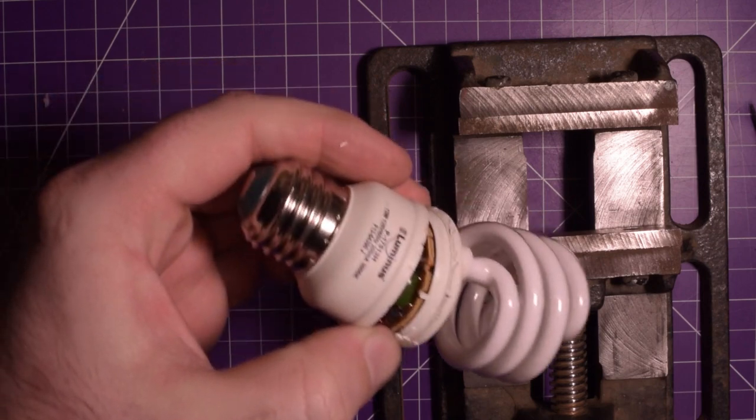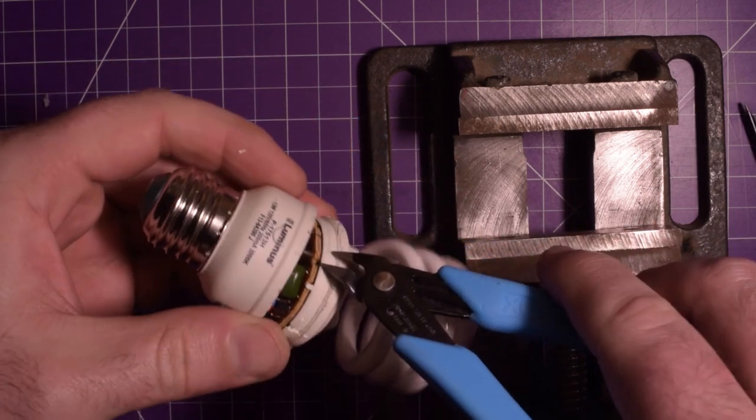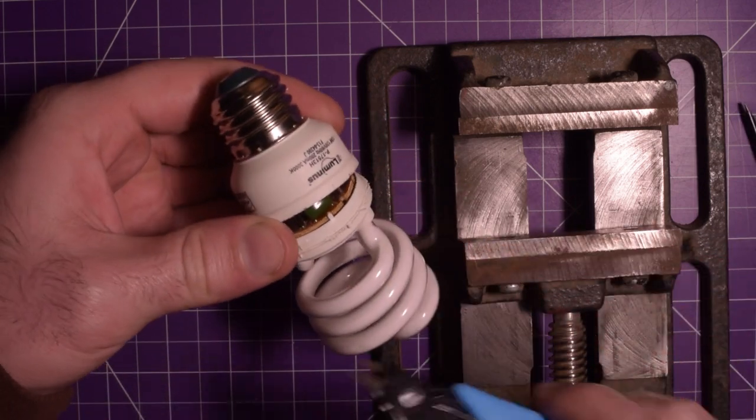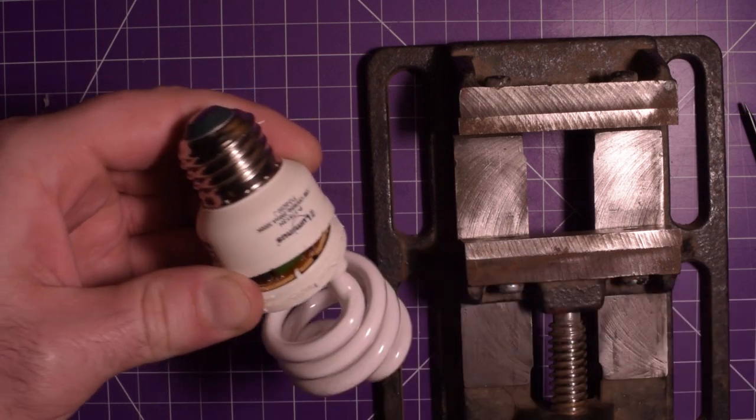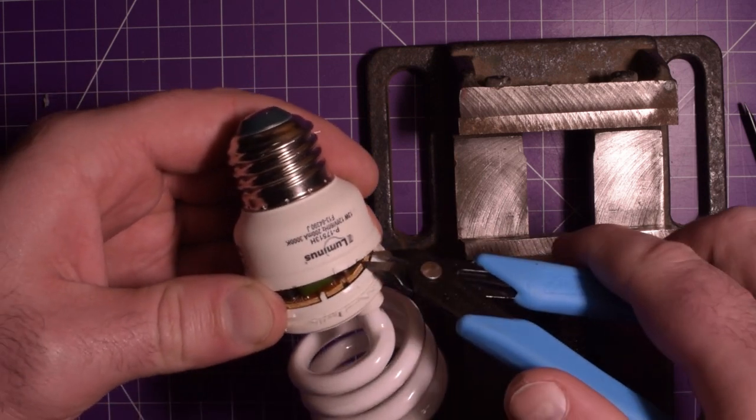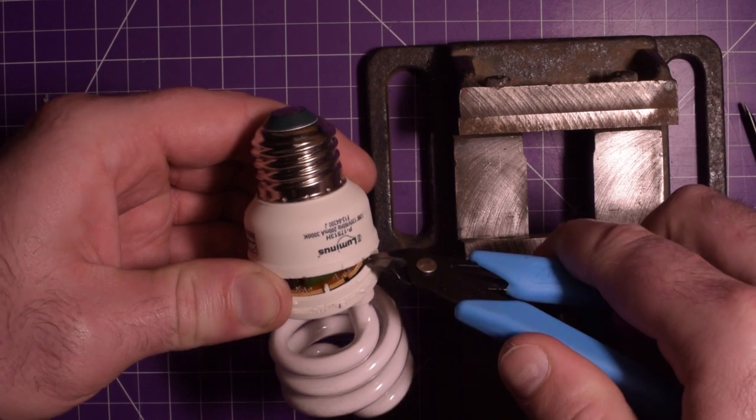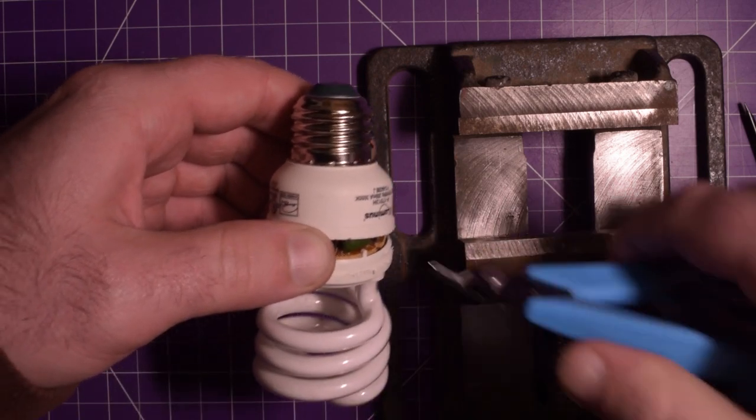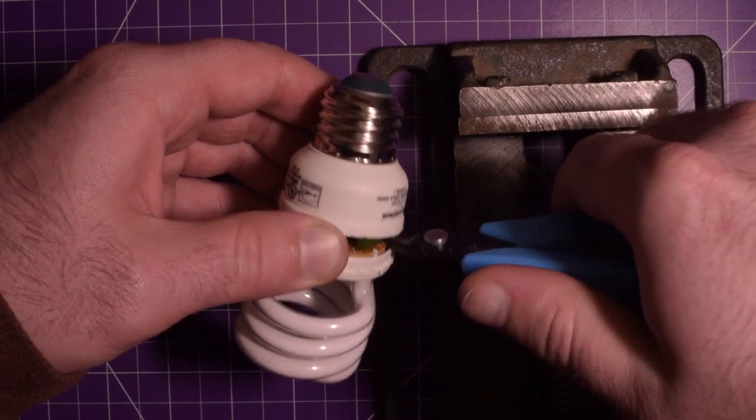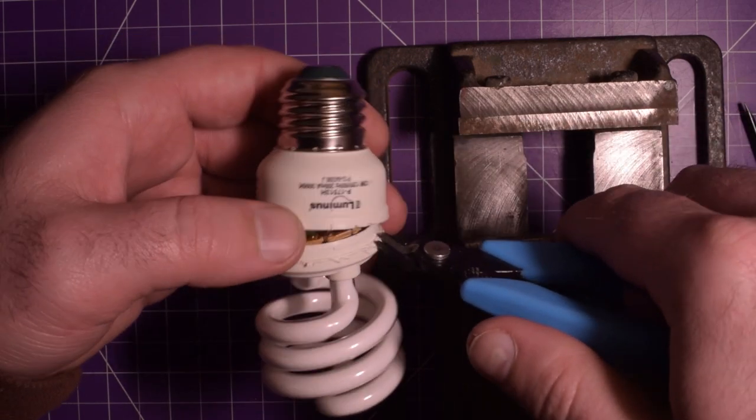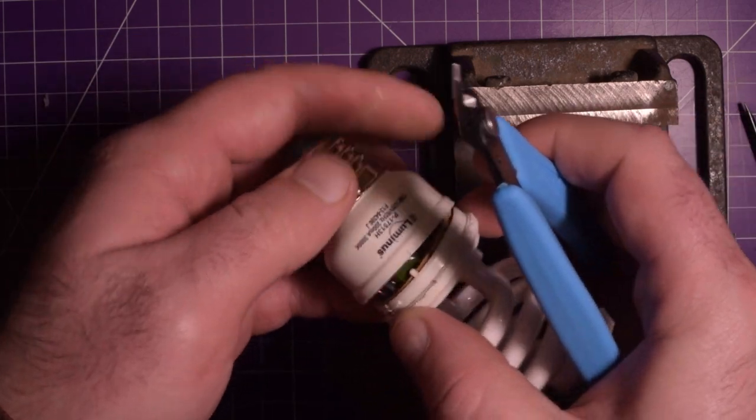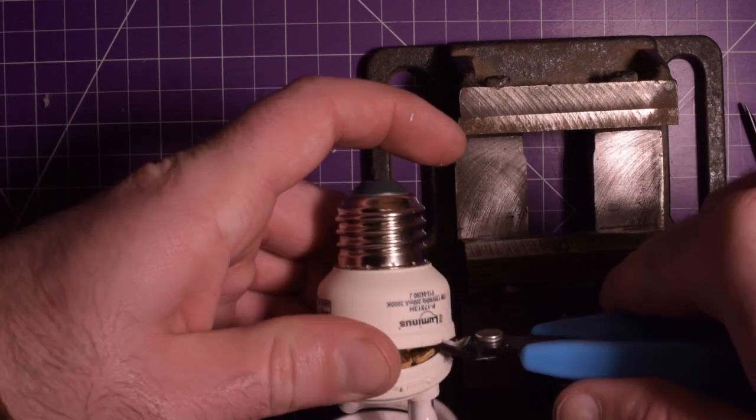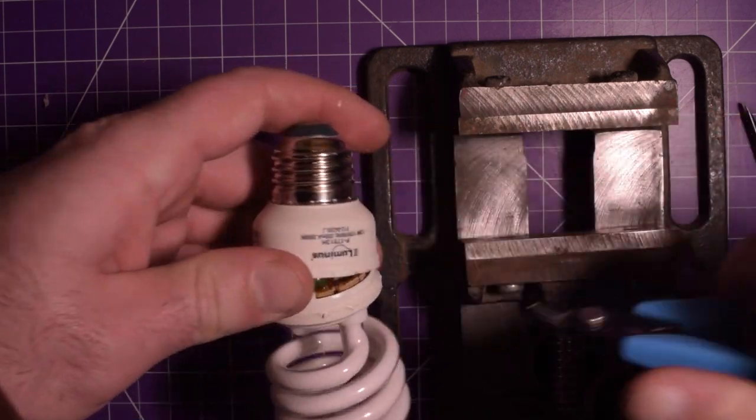What I can do, though, is I can snip these posts here. If you remember my last video, these posts here are what hold the tube inside. It's a little wire going to the tube. If I snip the posts, I also snip the wire that holds the tube. There's one.